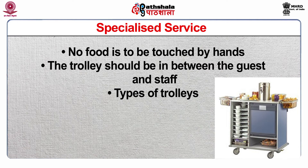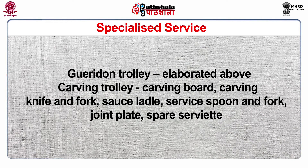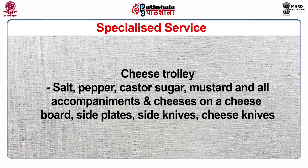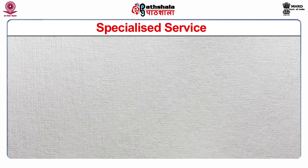There are various types of trolleys. Number 1: gueridon trolley. Number 2: carving trolley. Number 3: cheese trolley — on which salt, pepper, caster sugar, mustard, all accompaniments and cheeses on a cheese board, side plates, side knives, and cheese knives are placed. Number 4: flambé trolley — on which all service plates, spare knives and forks, spare joint plate, service spoons and forks, and all accompaniments are placed.